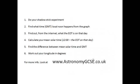In summary: do your shadow stick experiment and find out at what time GMT local noon happens from your graph. Then find out from the internet what the equation of time is on that day. Calculate your mean solar time — that will be your apparent solar time (midday) minus the equation of time on that day. Find the difference between your mean solar time and GMT, and since every degree equals four minutes, you can work out your longitude in degrees.